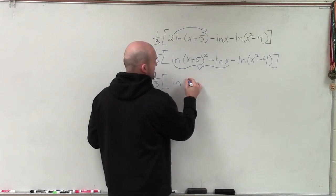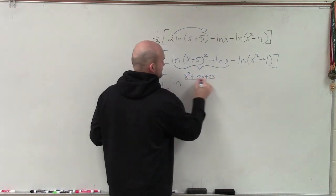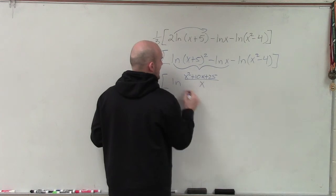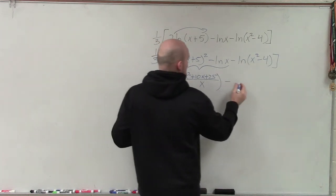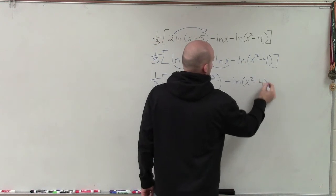That's a perfect square, so I can factor that out, or I'm sorry, FOIL that out, so it would be x squared plus 10x plus 25 divided by x minus ln of x squared minus 4.